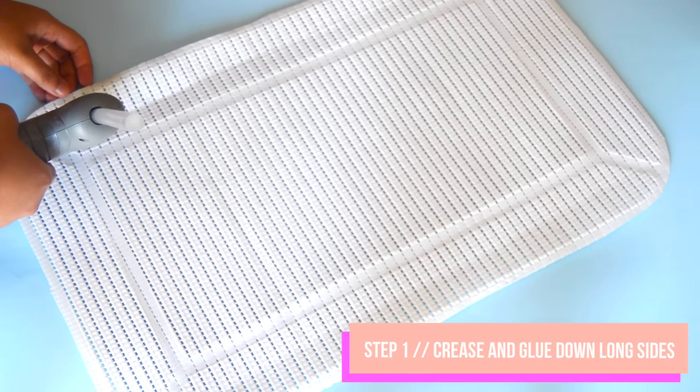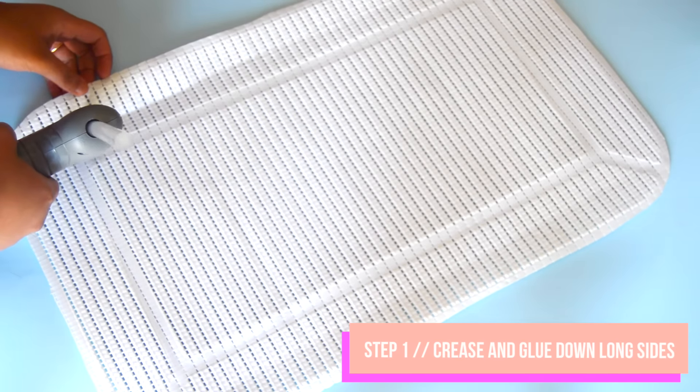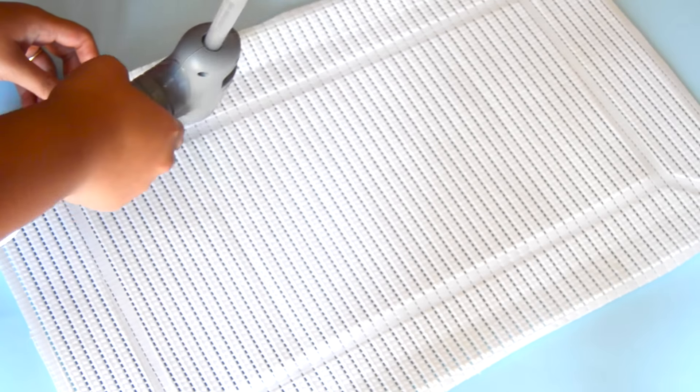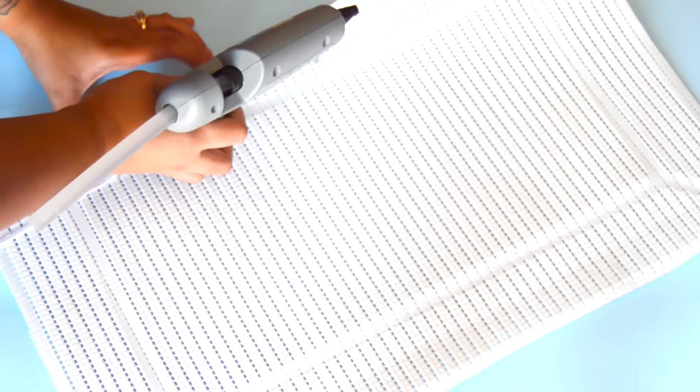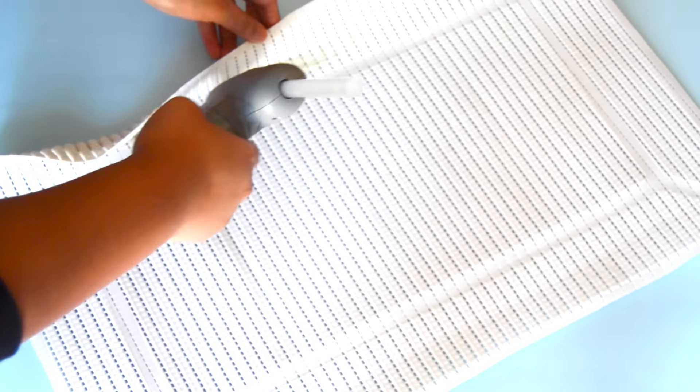First lay your table mat down flat and fold over the longer sides like so to create a crease. This will make it a lot easier to fold when you are applying the glue. Now using your hot glue gun spread the glue until smooth because you do not want the chunks of the glue seeping through, especially if your table mat is woven and thin.